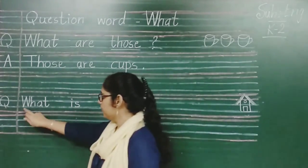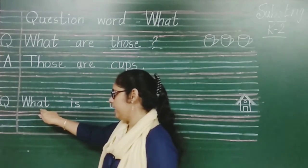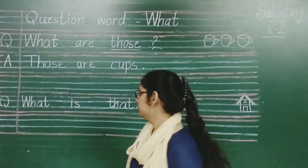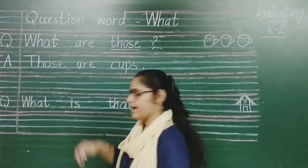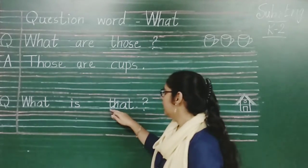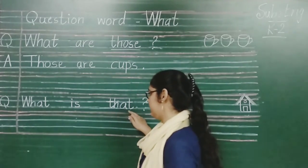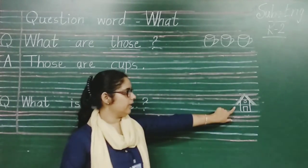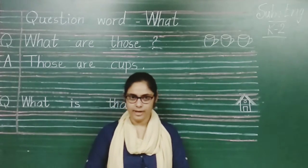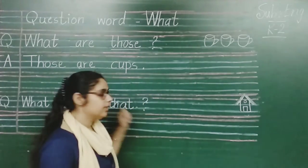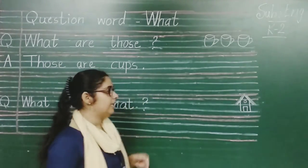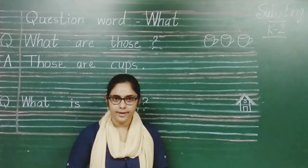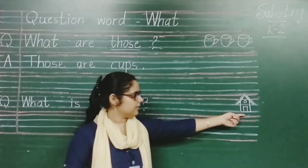Next question. W h a t what? I s is. T h a t that. What is that? Means yeh hamse door hai. That's why we have to use that. What is that? Means woh kya hai? To answer kya hooga? That is a hut.